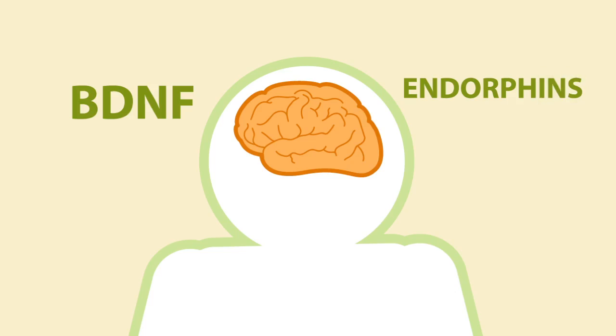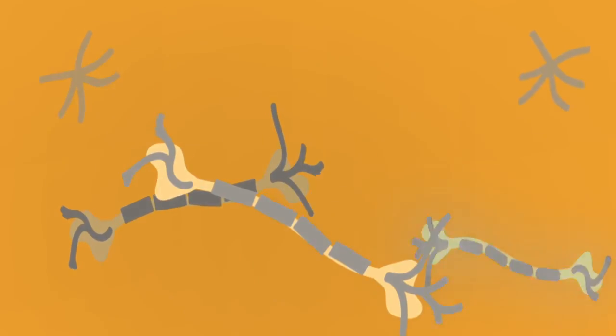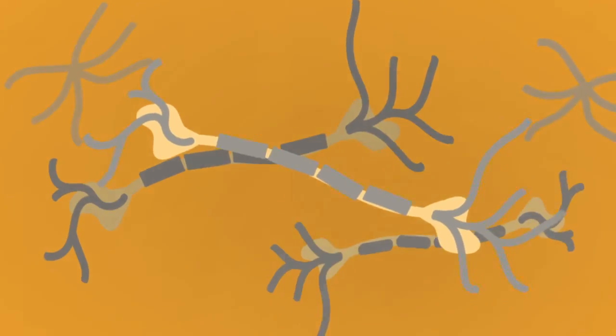BDNF and endorphins are released. BDNF repairs and protects your memory neurons and clears your mind so you can make good decisions.